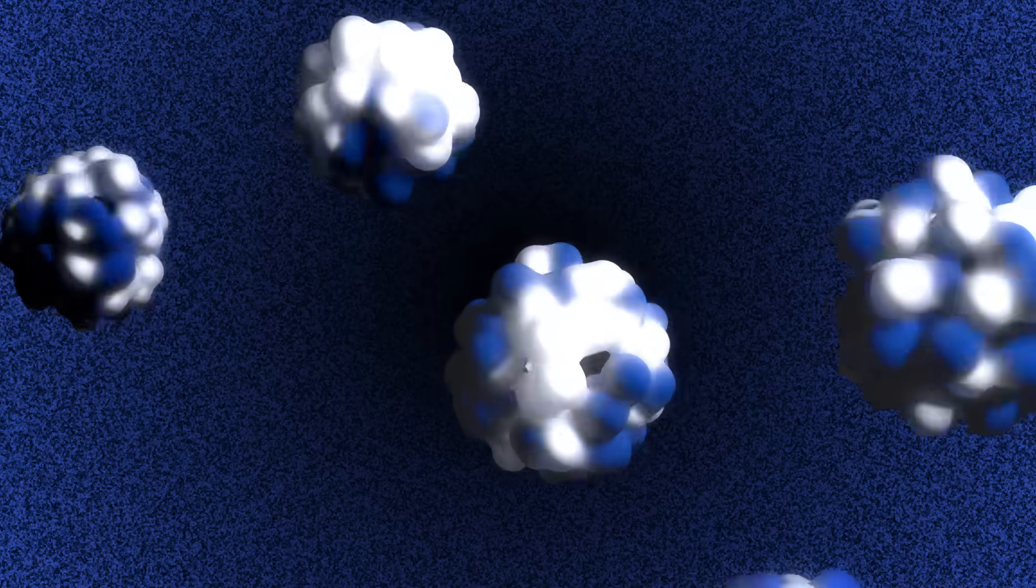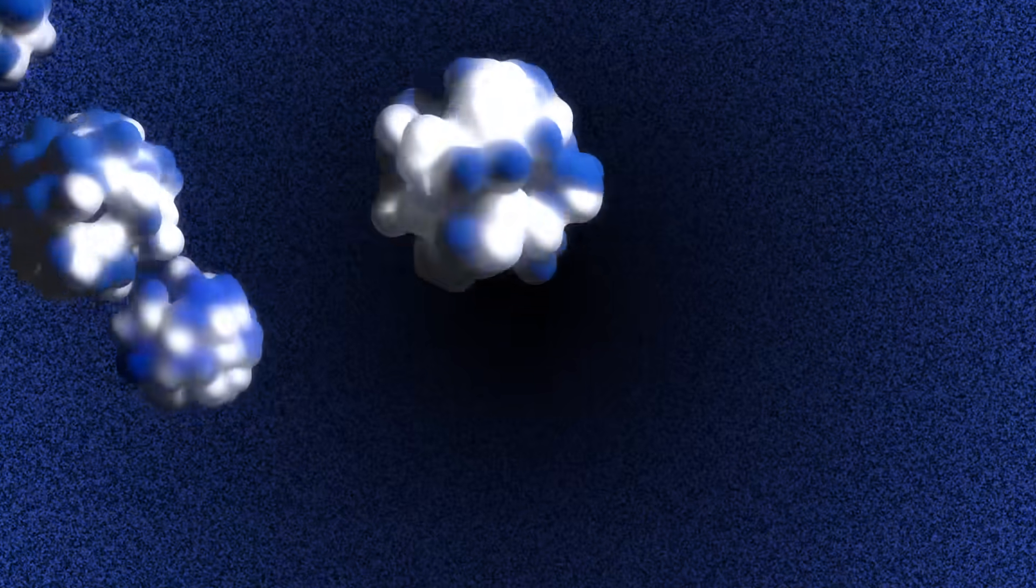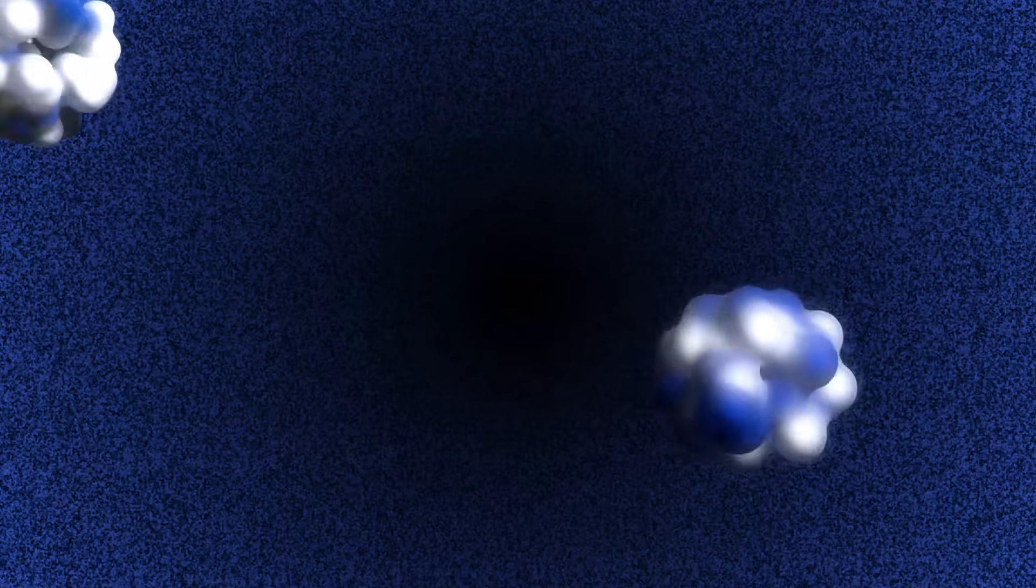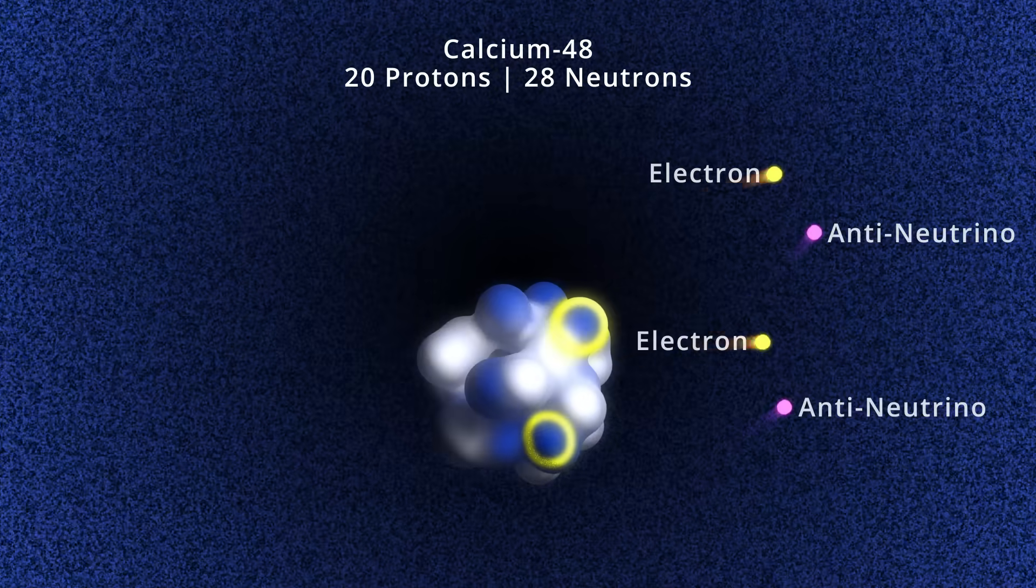Double beta decay occurs in nuclei who cannot undergo a single beta decay as the required energy is unavailable. But it is energetically advantageous for them to decay into a more stable nucleus by simultaneous emission of two electrons, turning two neutrons into two protons.